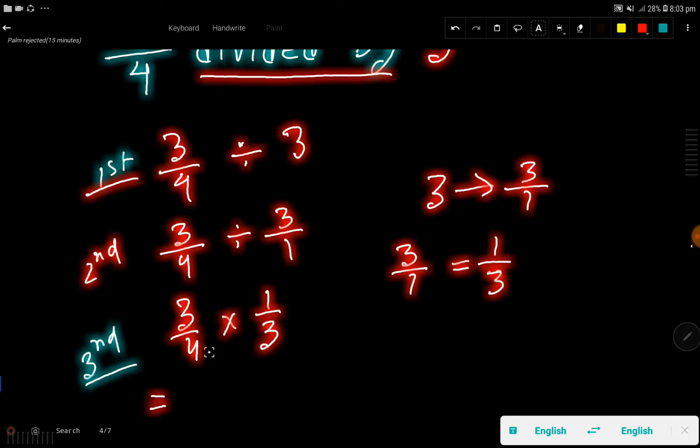Now we have to multiply. We have to multiply numerator to numerator, then denominator to denominator. Numerator: 3 times 1. Then we have to take the denominator: 4 times 3.